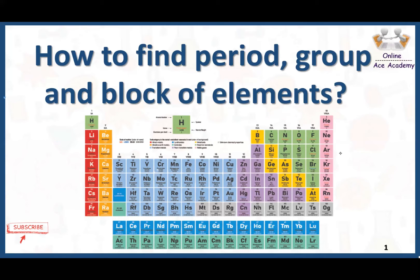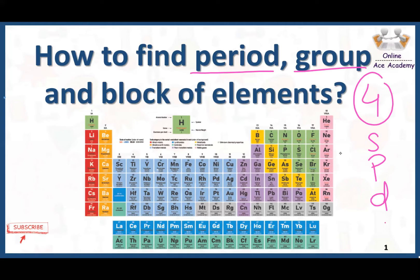As we all know, the periodic table is arranged in the form of periods and groups. Moreover, it is also classified into four major blocks: S, P, D, and F block. In today's video, we are going to learn how to find out the period, group, and block of any given element from the periodic table.